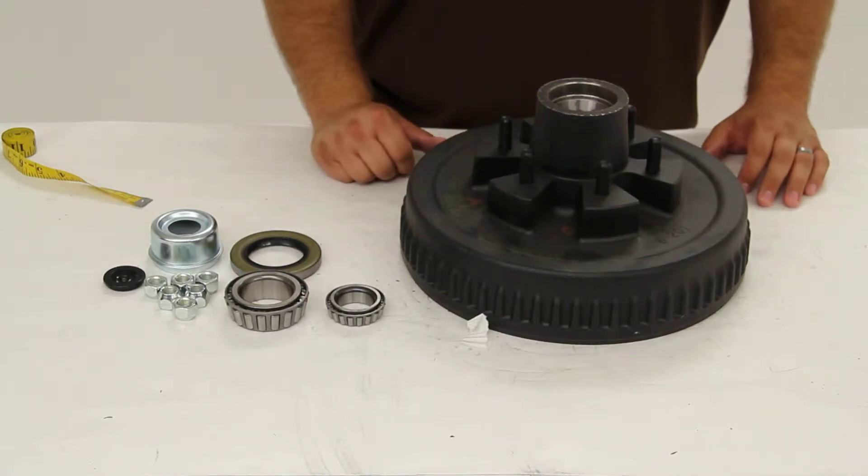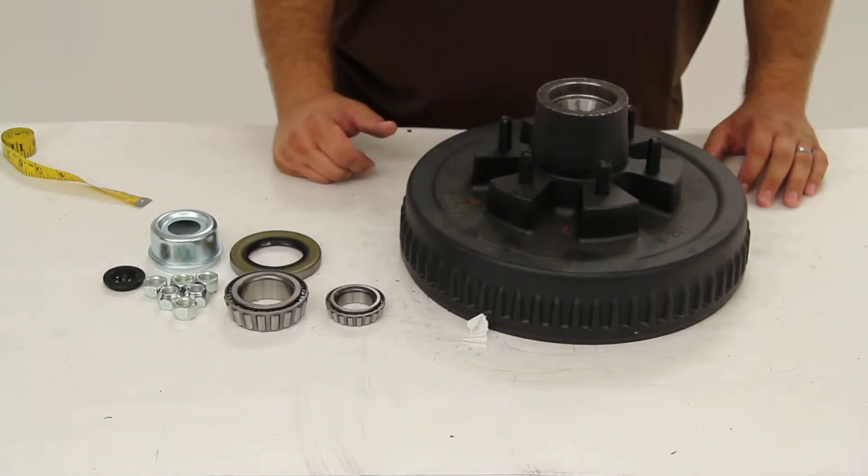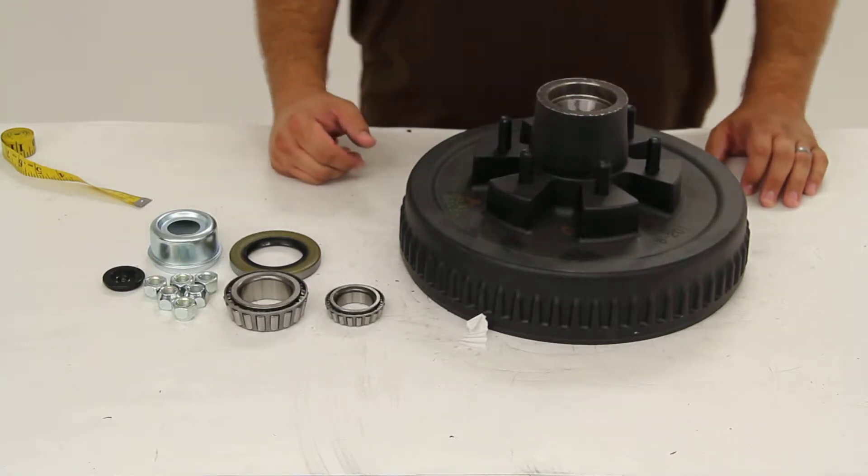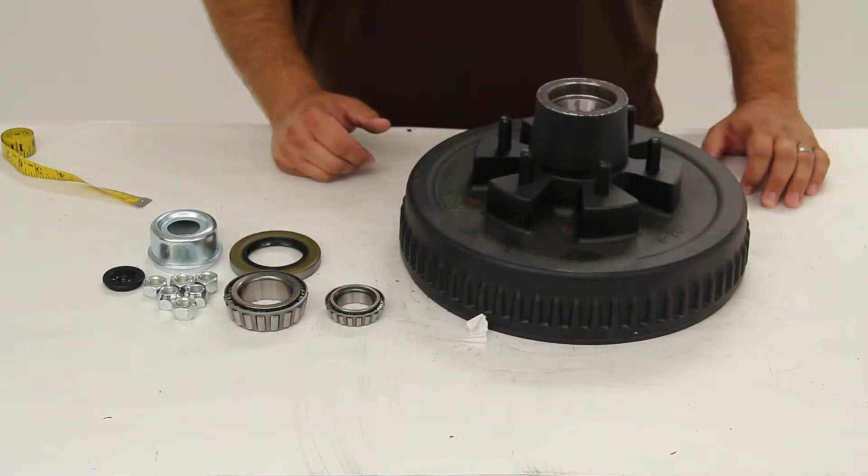Today we're going to take a quick look at Dexter Axle's trailer hub and drum assembly, part number 8-201-5UC3-EZ.